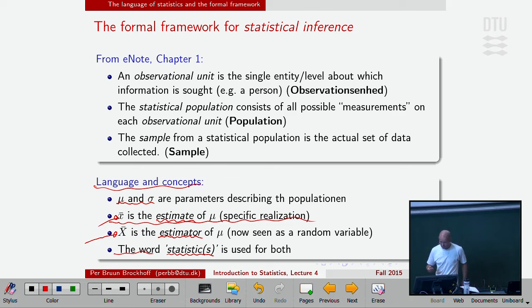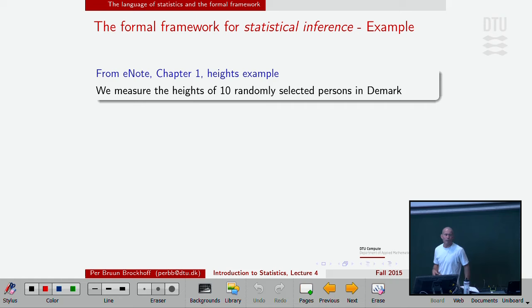Then we use the word statistic in English, or statistics, for something that we compute like the mean. That is a statistic in English. The word statistic or statistics in plural, when we talk stats language, can mean both the one we have computed and the one we see as a random variable. It's the context that would say whether we mean one or the other. You can get back to this slide if you get in doubt.